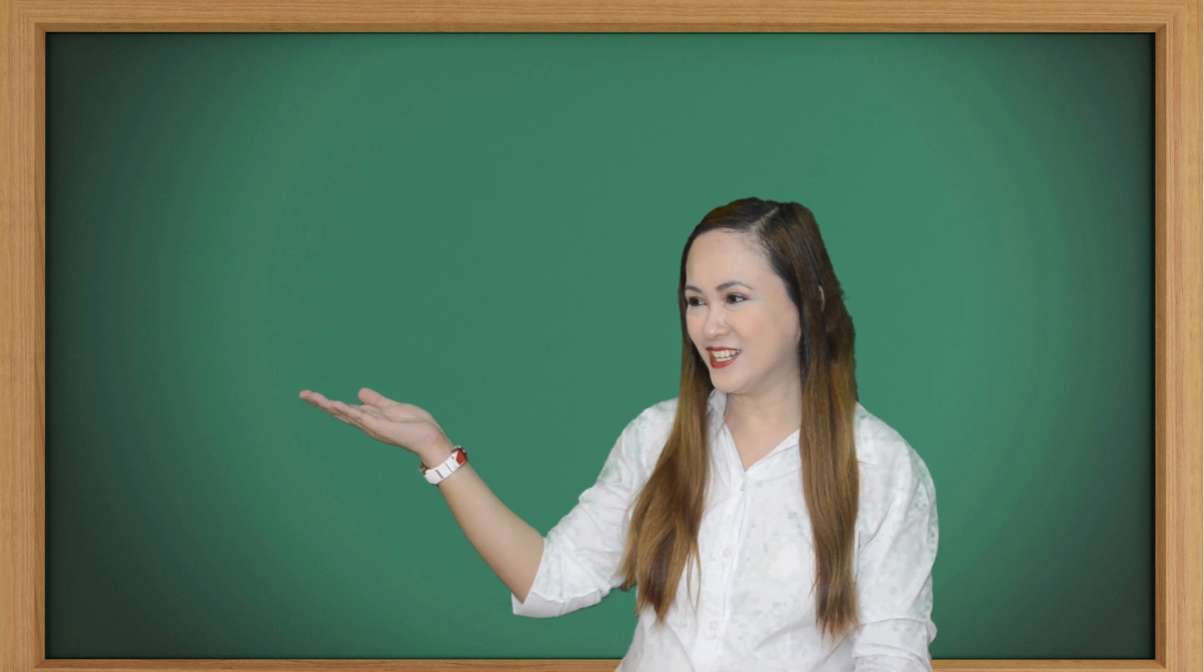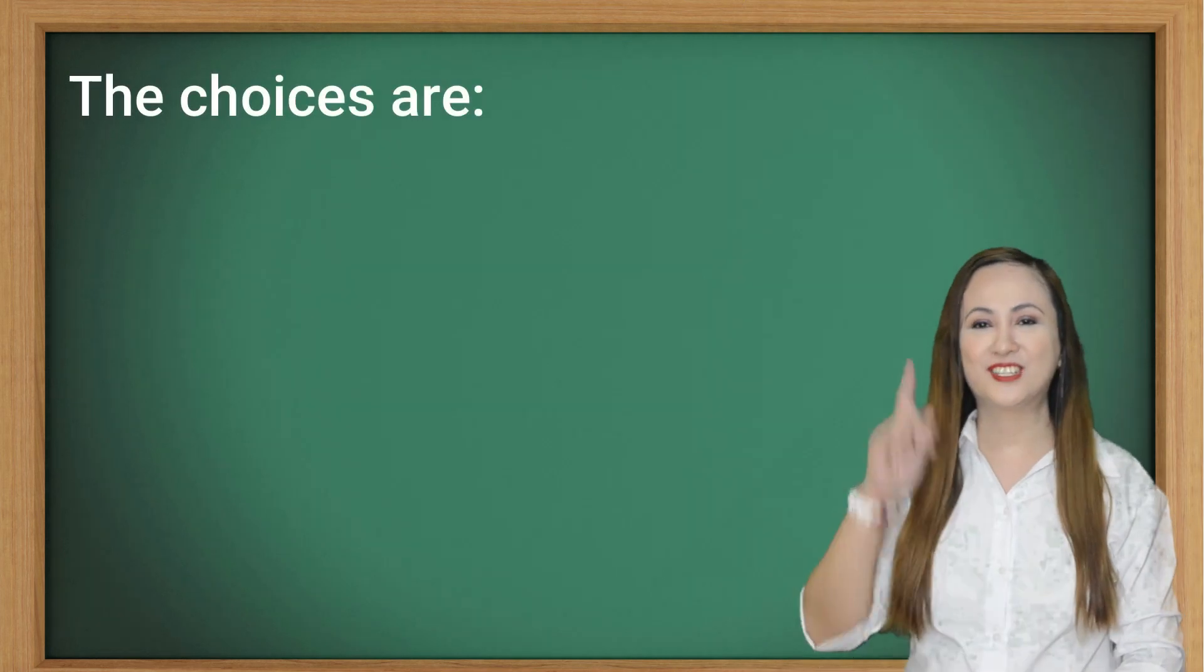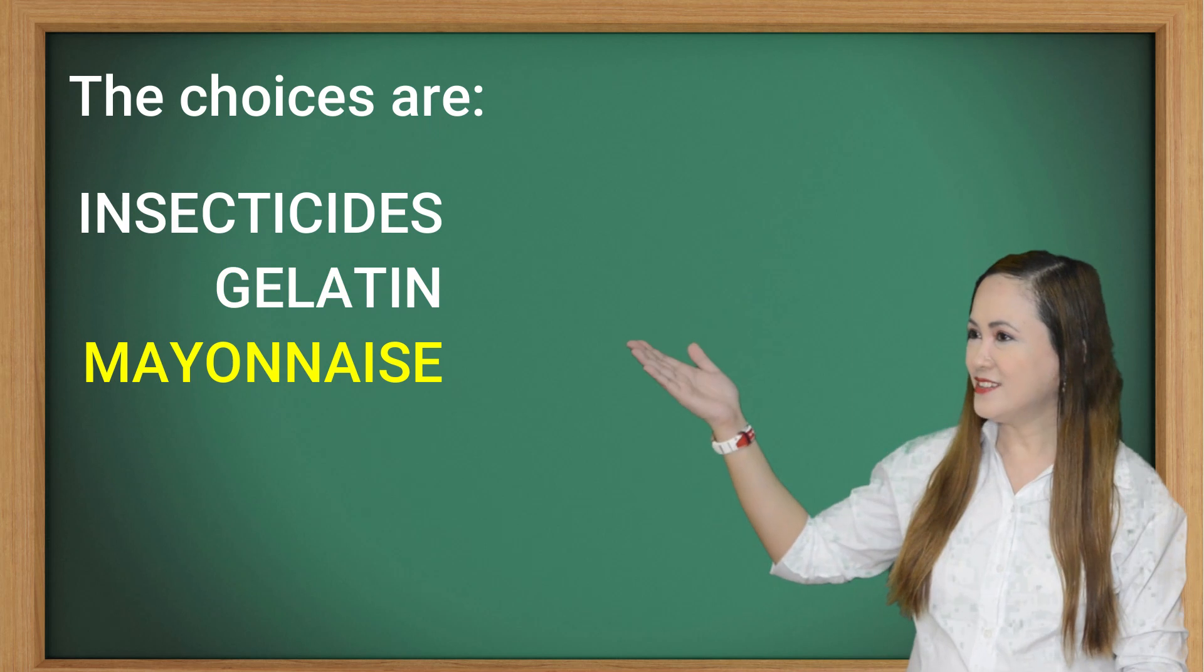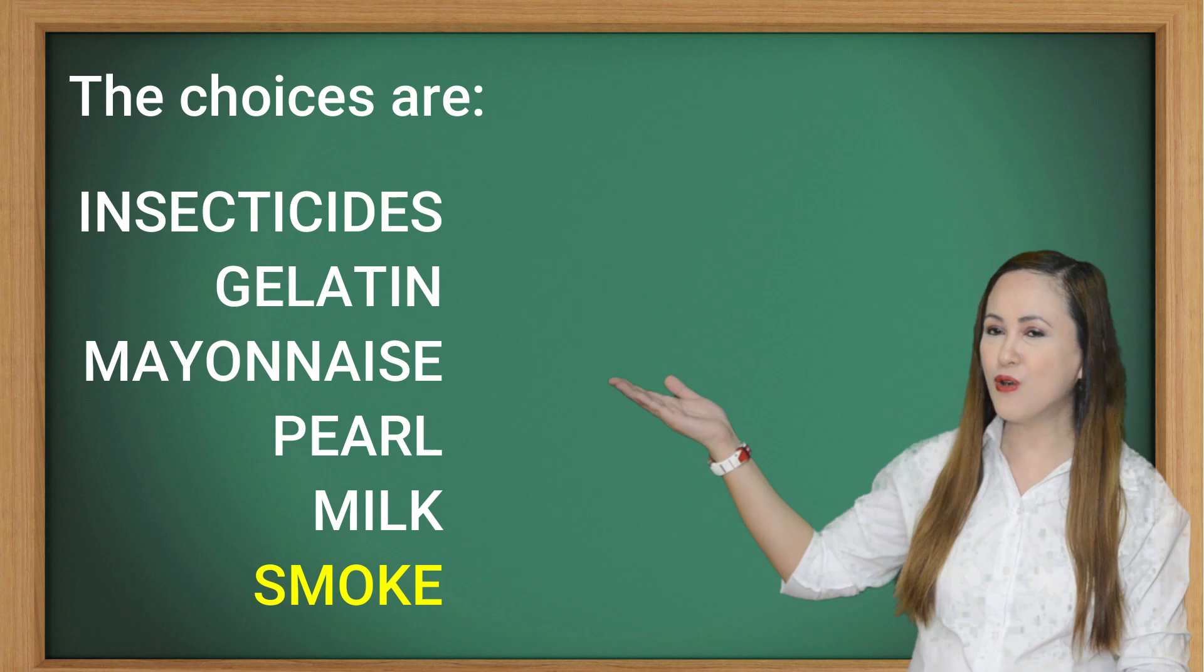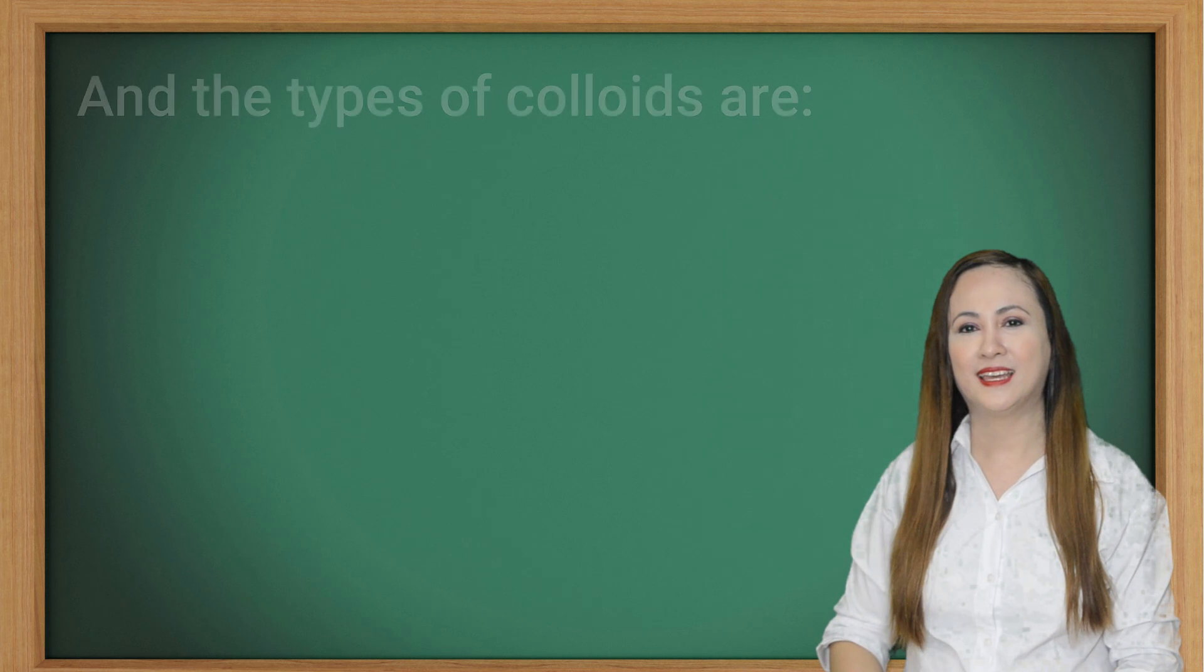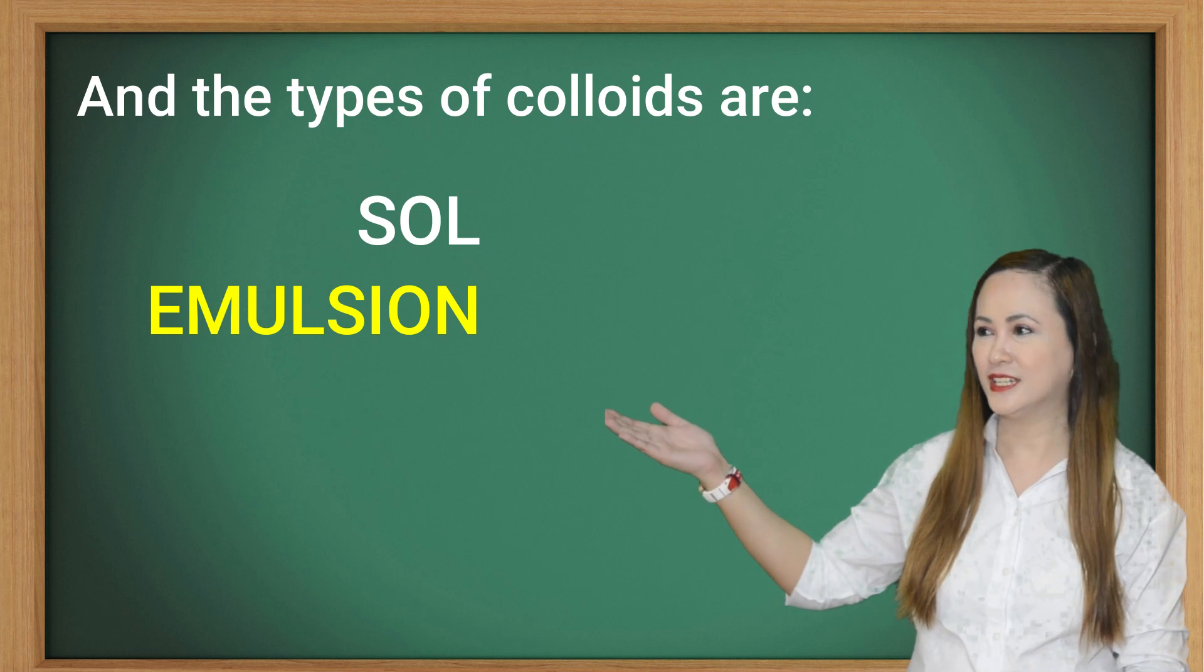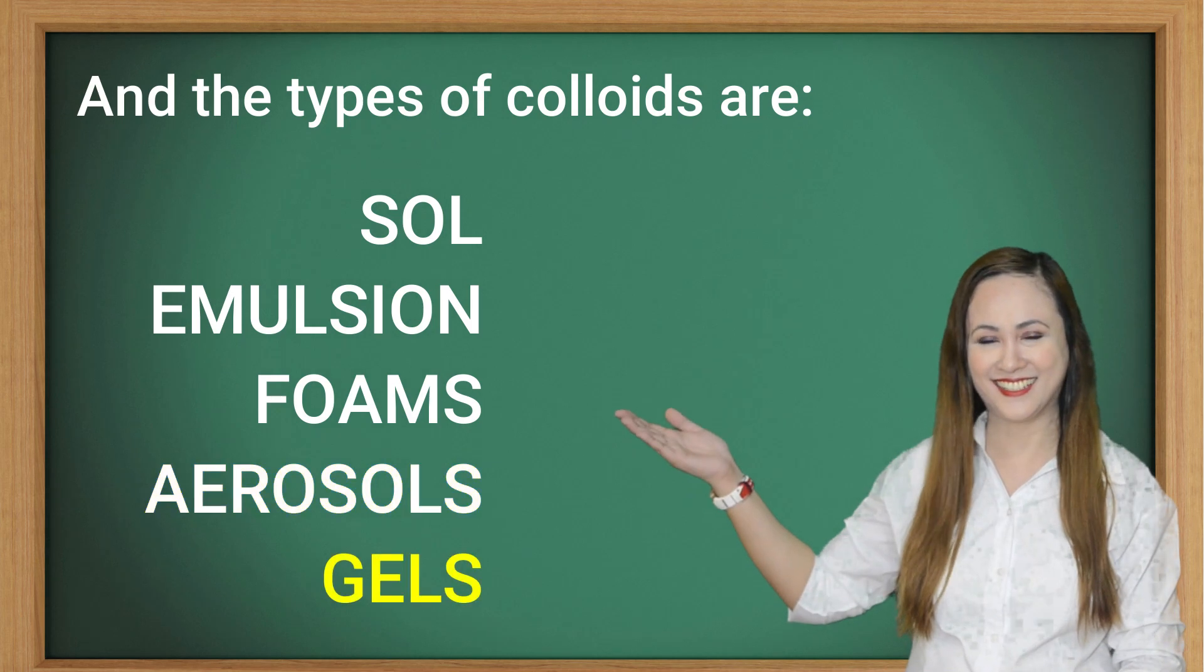Let's see if you learned something. Answer this. Classify the colloid materials written inside the box according to their types. The choices are insecticides, gelatin, mayonnaise, pearl, milk, smoke, shampoo, paint. And the types of colloids are sol, emulsion, foams, aerosols, and gels.